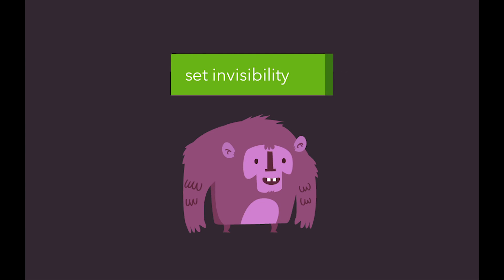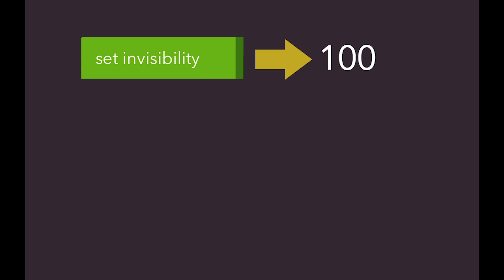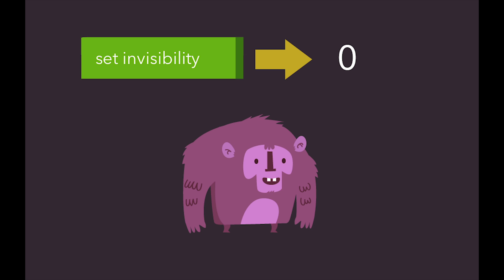See, move with trail is awesome. Let's talk about the set invisibility block. This block lets you make the object more or less invisible. Setting the block to 100 makes the object disappear — it's 100% invisible, or totally invisible. Setting it to 0 makes it appear because it's 0% invisible, or not at all invisible. 50 would make it halfway invisible.